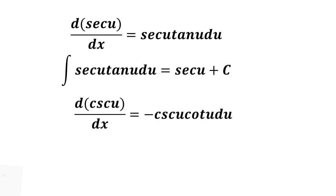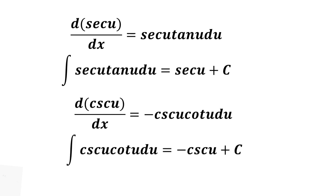The derivative of cosecant u is equal to negative cosecant u cotangent u du. In reverse, the integral of cosecant u cotangent u du is equal to negative cosecant u plus c.